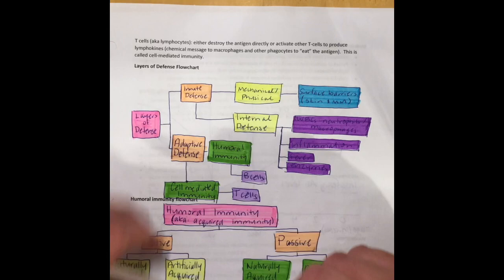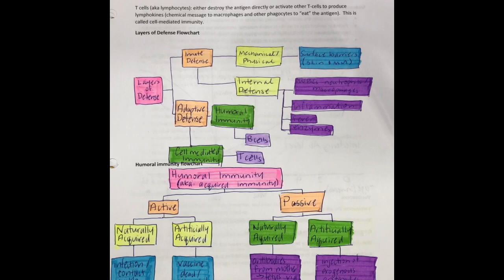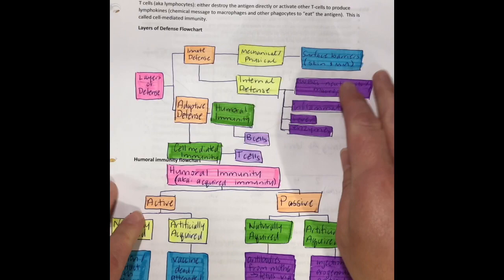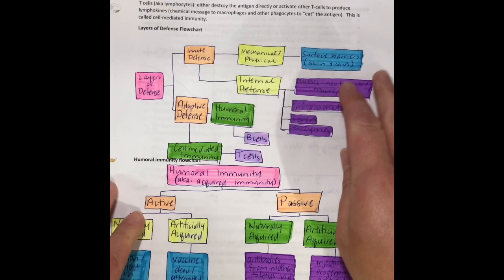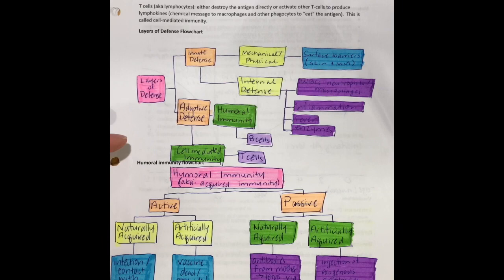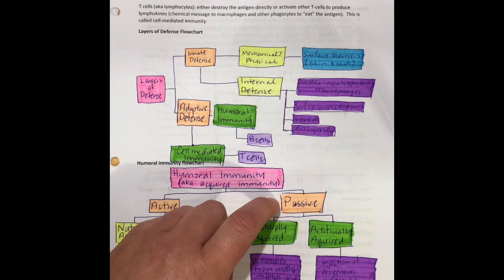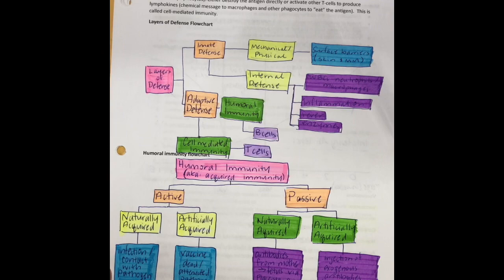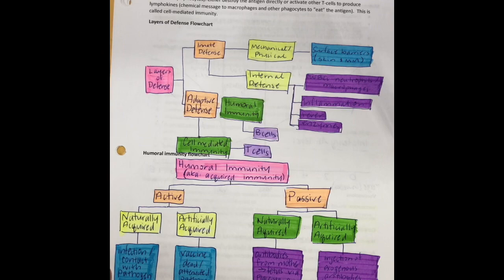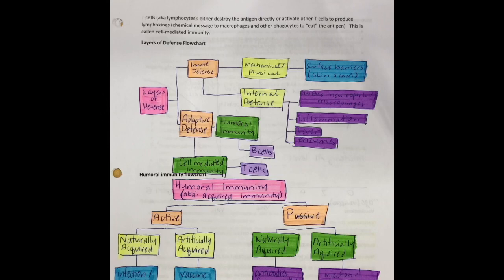Here's a humoral immunity flow chart. Humoral immunity involves these B cells making antibodies. Humoral immunity is also called acquired immunity — it's acquired because we either actively get it or are passively given it. Naturally acquired active immunity is when we've gotten an actual infection or had contact with an actual pathogen. For example, if you were to encounter coronavirus and recover from it and then be immune to it, that would be naturally acquired active humoral immunity.